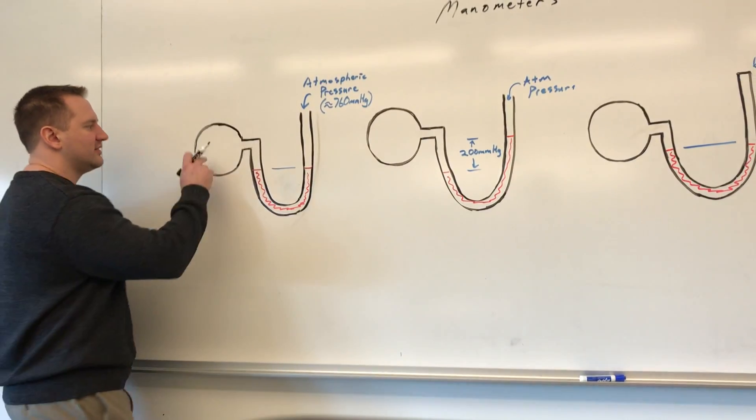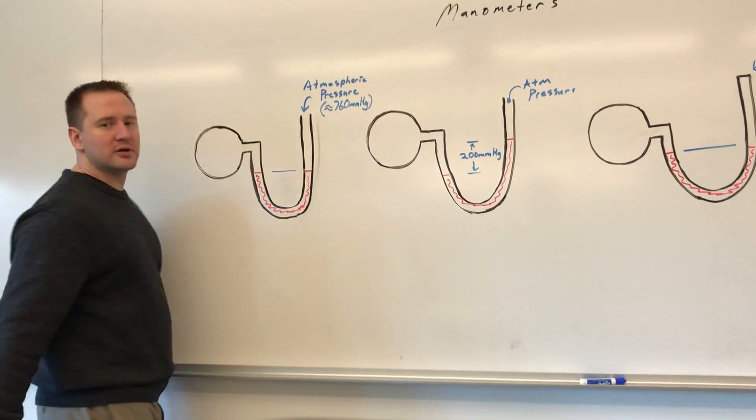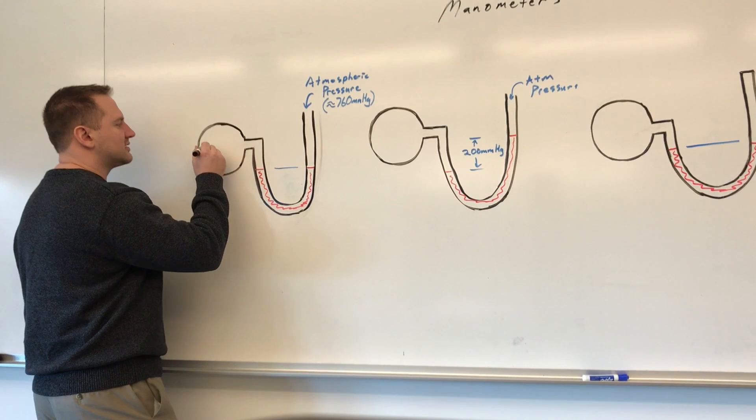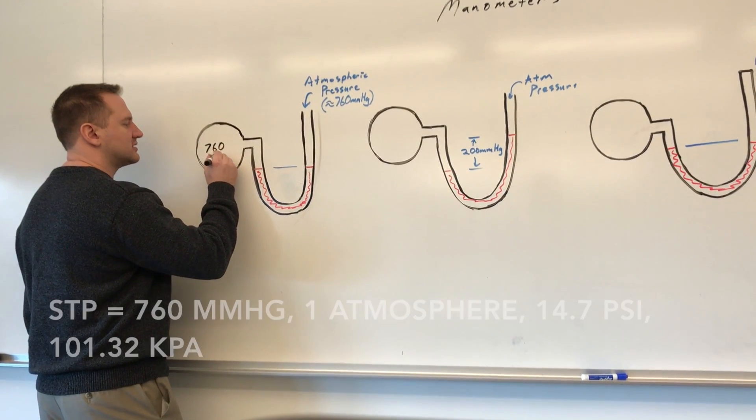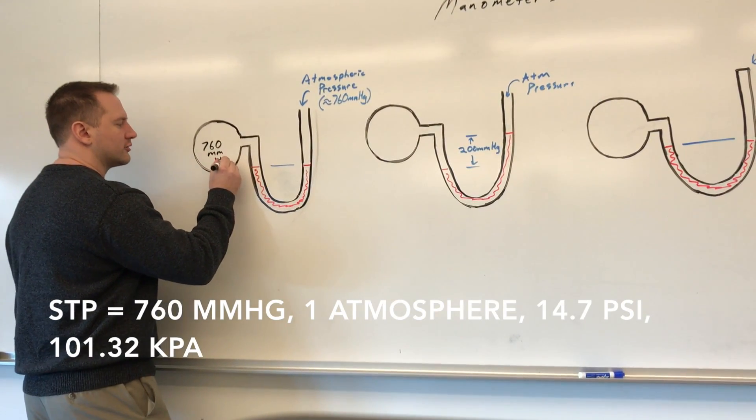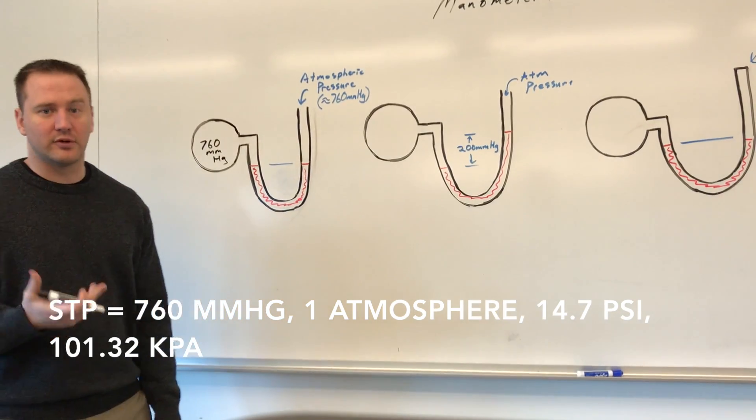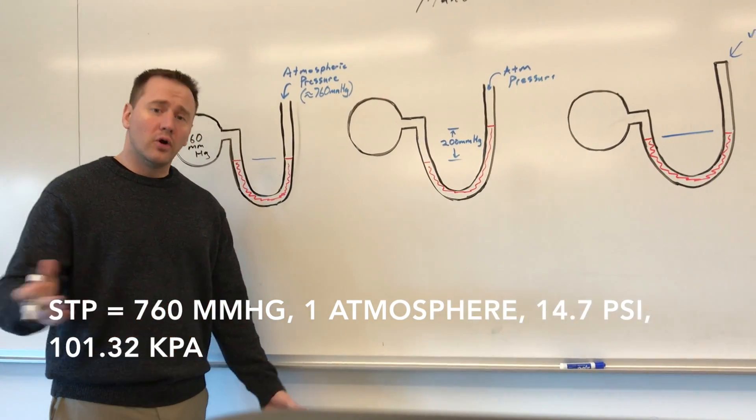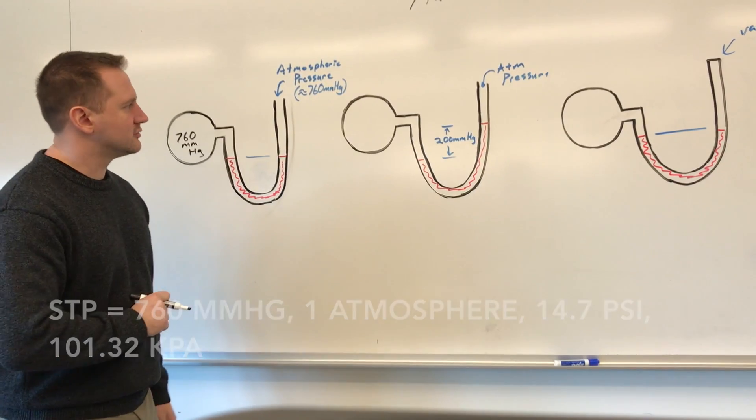We could say that inside this, if we're assuming the atmospheric pressure is 760, we have 760 millimeters mercury worth of pressure, which is the equivalent of one atmosphere or 14.7 psi or 101.32 kilopascals.